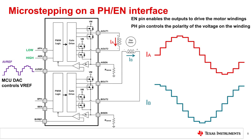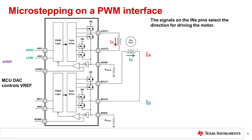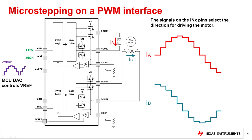To properly drive the stepper motor, the sinusoidal voltage references for the AVREF and BVREF pins must be 90 degrees out of phase. The PWM interface can also drive stepper motors in a similar way to the phase enable interface. The input pins configure the direction of the current, and the VREF pin sets the current regulation levels. By switching the states of the input pins, the current also changes direction. Just like the phase enable interface, the sinusoidal voltage reference of the BVREF pin must also be 90 degrees out of phase with the AVREF signal.